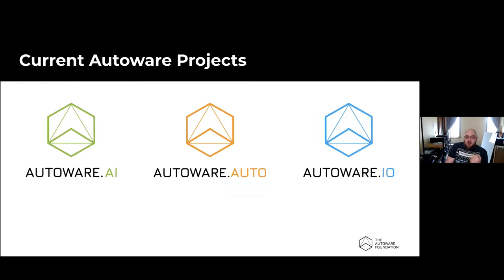The major current AutoWare projects are AutoWare.AI, which is currently in maintenance mode and going end-of-life in a couple of years; AutoWare.Auto, which we'll talk more about today; and AutoWare.IO, which is about connecting AutoWare to different hardware platforms and sensors and making it interact with those in a simple way, even if the hardware, operating system, or sensor driver is closed source.